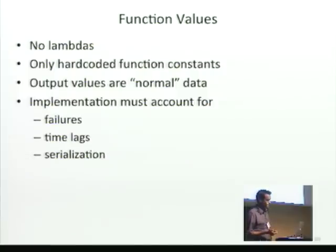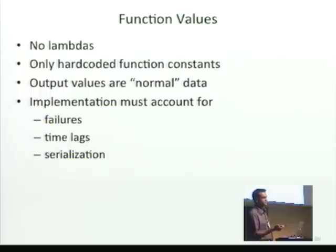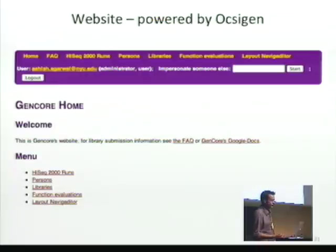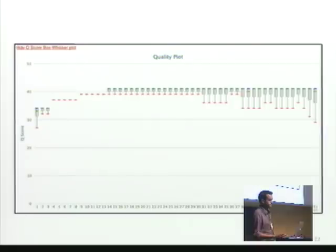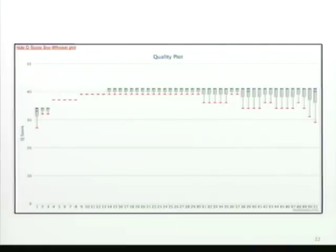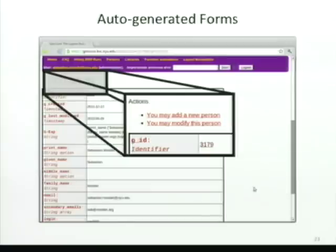We consider failures, time lags, and serialization issues to be at the meta level. In the DSL, we assume that the function is returning a normal simple value. This is just a screenshot of our website. We let users log in and look at a variety of information, with nice plots to understand the quality of the results they're getting. We get some auto-generated admin interfaces which let users click on links to modify their own information, and we can do other things like add new users.